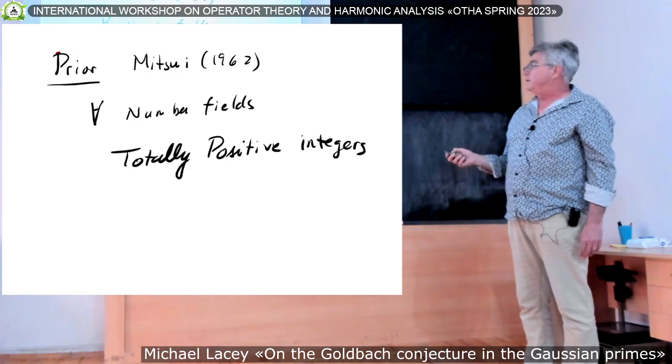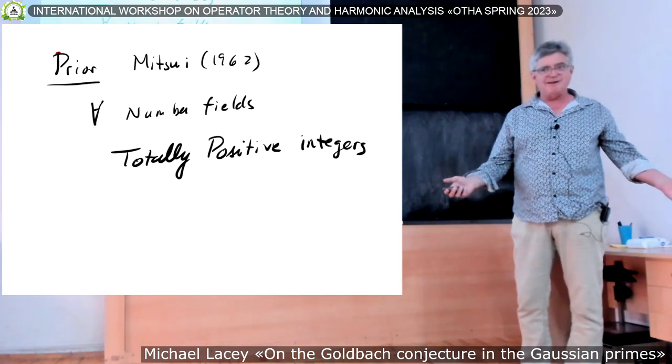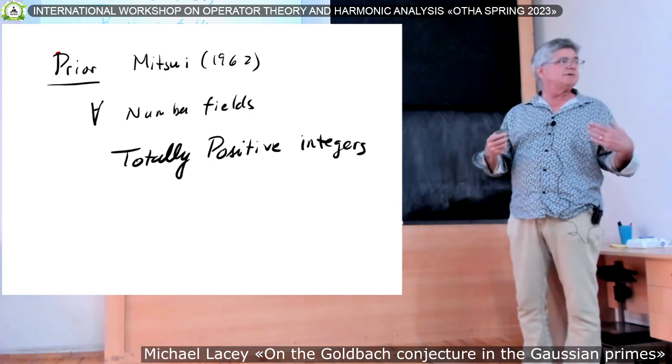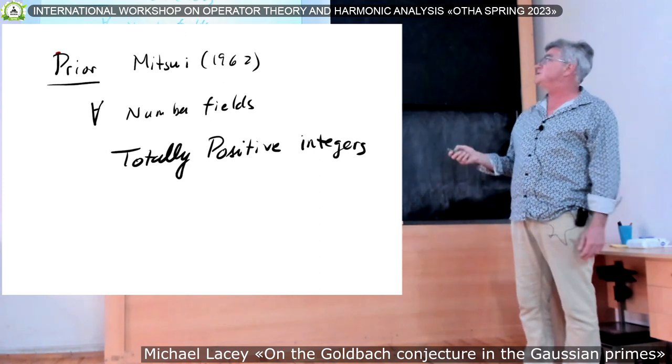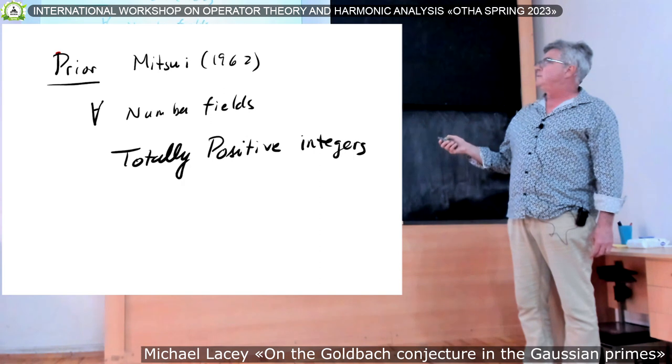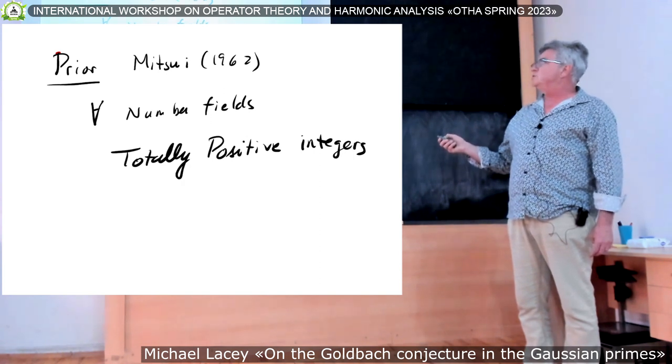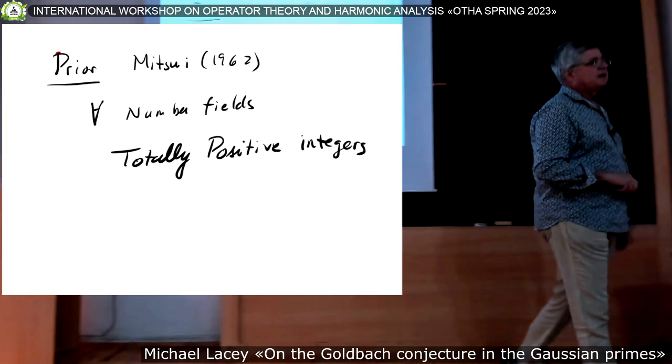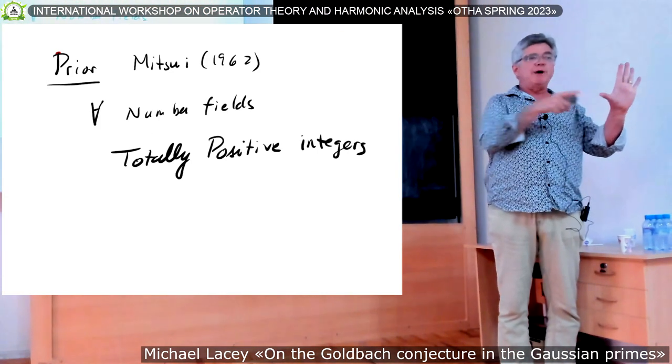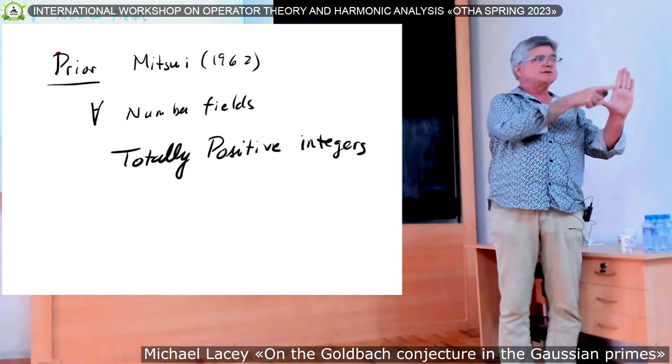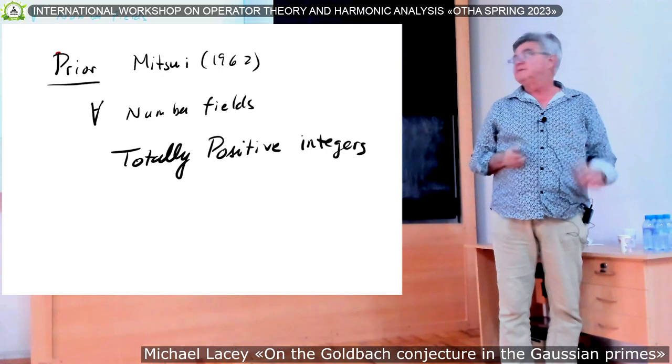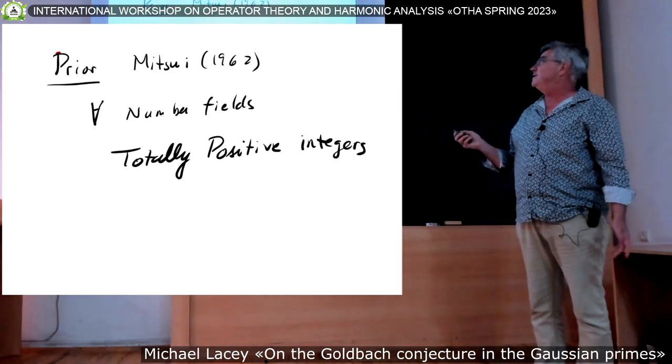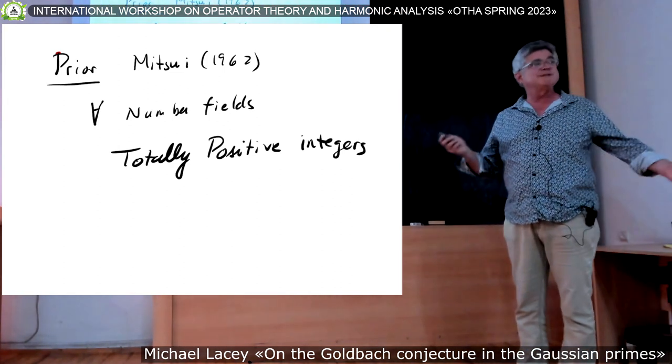So the prior work in this direction, of course, well, first of all, as I mentioned in the next slide, Vinogradov. But in the setting of Gaussian integers, or more generally, number fields, there's a paper from Mitsui in 1962, who addresses all number fields, but restricts to the totally positive case. So if you restrict to the Gaussian integers, it's the positive quadrant. So our result is, as far as we're aware, the first new result in some 60 years.